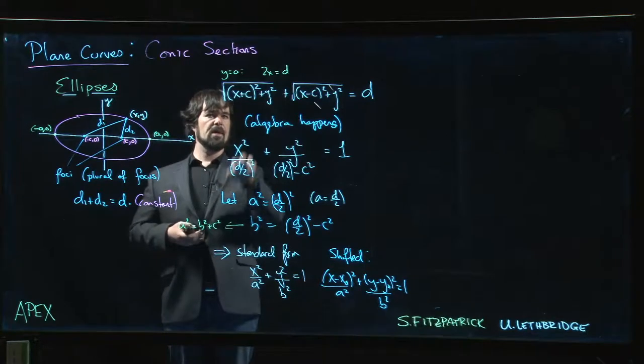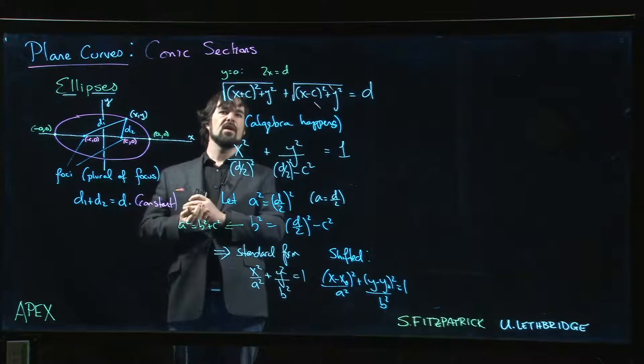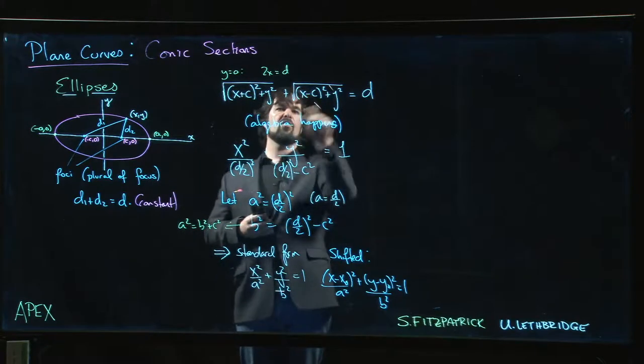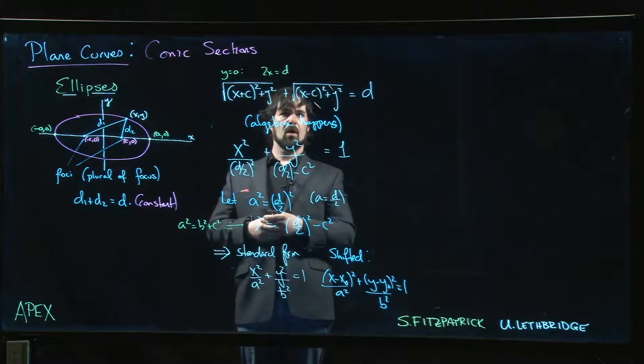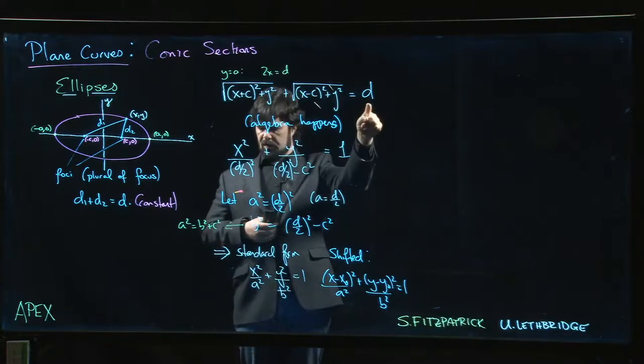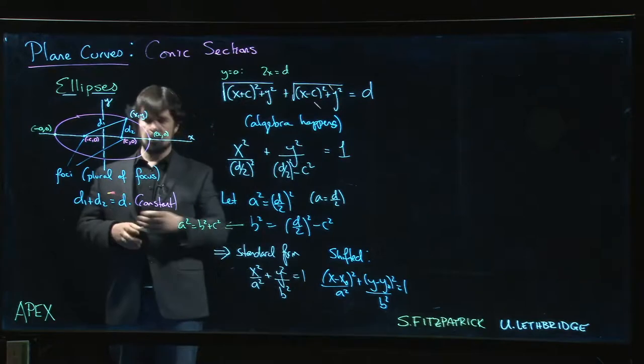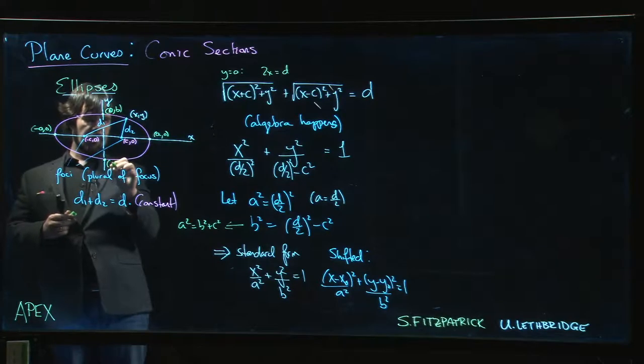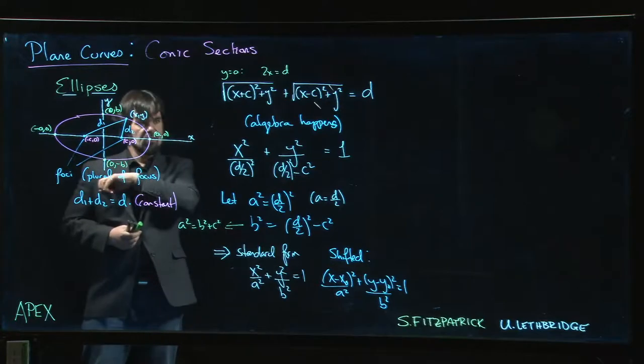But what we can do is we can play around and we can work out that what we get for b is, well, b is basically what we get if we put x equal to 0. If we put x equal to 0 in this equation, we get √(c² + y²). We get 2√(c² + y²), which equals d. That means √(c² + y²) is d/2, which is a. So we can work out that actually what b is—b is the coordinate up here. So b gives the value for that y-intercept.